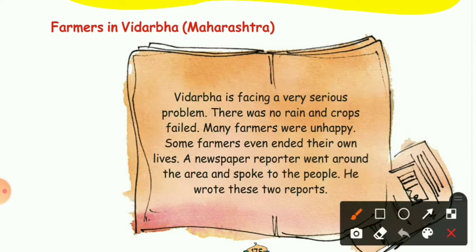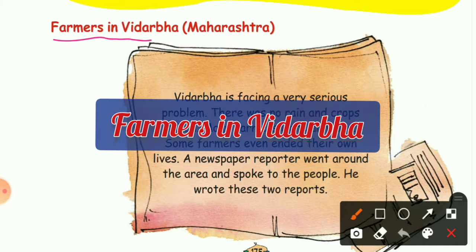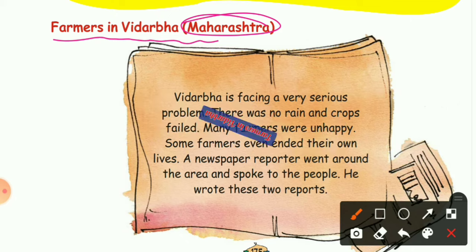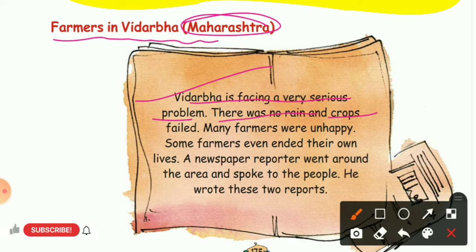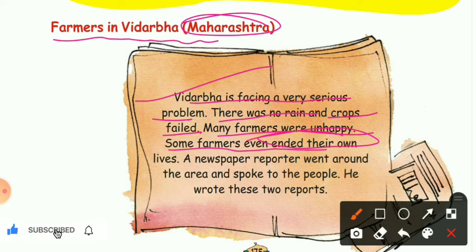Today's topic is 'Farmers in Vidarbha,' located in Maharashtra. Vidarbha is facing a very serious problem — there was no rain and crops failed. Farmers were unhappy, and some farmers even ended their own lives.